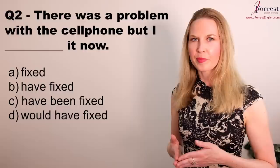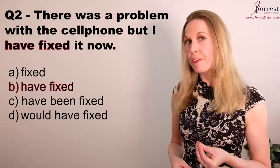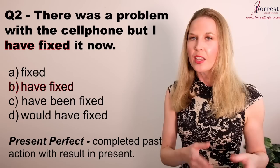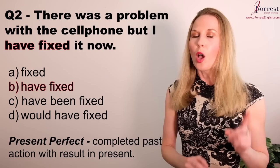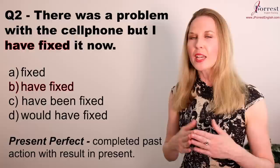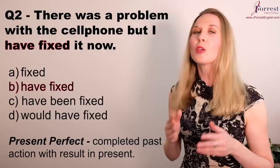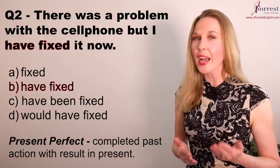Question two: There was a problem with the cell phone, but I have fixed it now. We need the present perfect verb tense because we're talking about a past action that's complete — the cell phone is fixed right now. There's a result in the present, indicated by the keyword 'now'. When talking about a past action with a result in the present, the best choice is the present perfect.